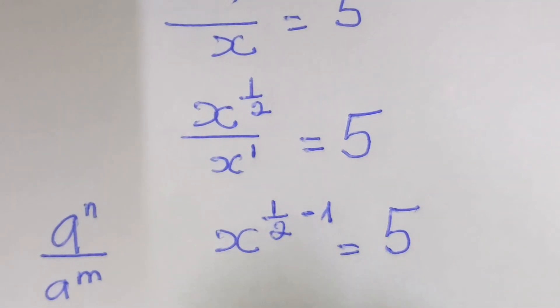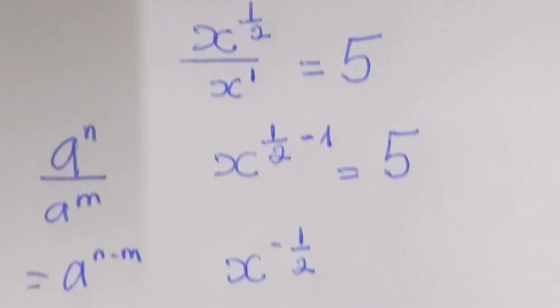To mean that x power 1 over 2 minus 1, this is equal to negative 1 over 2, which equal to 5.